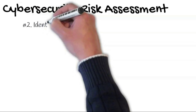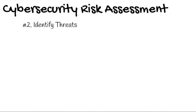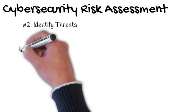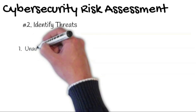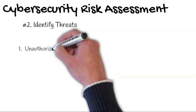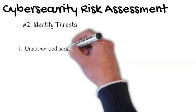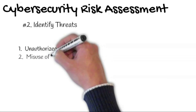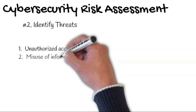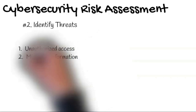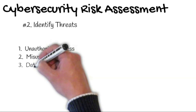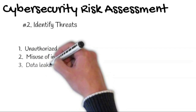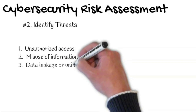The second step is to identify threats. There are some basic threats that will appear in every risk assessment, however depending on the system, additional threats could be included. Common threat types include: one, unauthorized access — malicious or accidental — which could be from a direct hacking attack, malware infection, or internal threat; two, misuse of information or privilege by an authorized user.